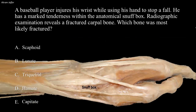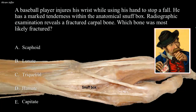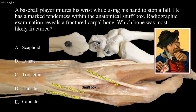The anatomical snuff box is located on the dorsolateral aspect of the wrist. It is a shallow triangular depression that is visible when the thumb is extended. The name originates from the use of this surface for placing and then sniffing powdered tobacco or snuff. The tendons of abductor pollicis longus and extensor pollicis brevis bound the anatomical snuff box anteriorly. The tendon of extensor pollicis longus bounds it posteriorly. In its floor can be felt the styloid process of the radius, the scaphoid bone, the trapezium, and the base of the thumb metacarpal. Pulsations of the radial artery can also be felt within the box.